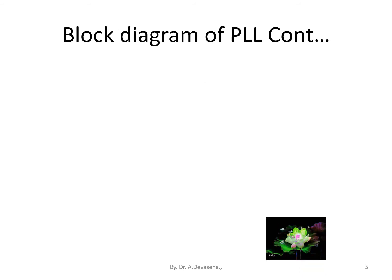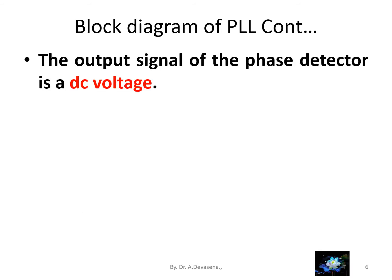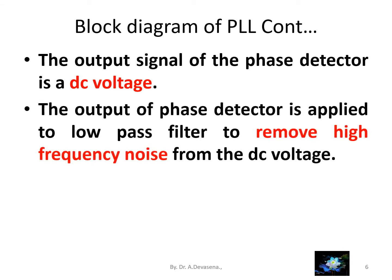The phase detector compares the input frequency with the feedback frequency and generates an output signal which is a function of the difference between the phases of the two input signals. The output signal of the phase detector is a DC voltage. The output of the phase detector is applied to a low pass filter to remove high frequency noise from the DC voltage.